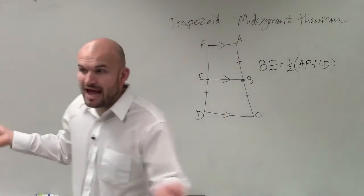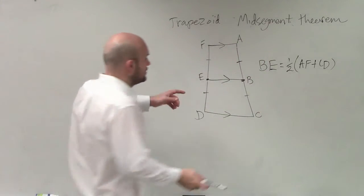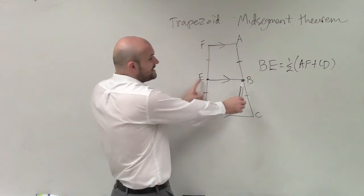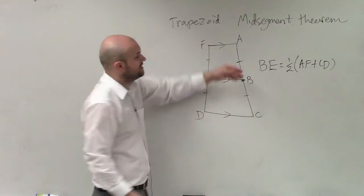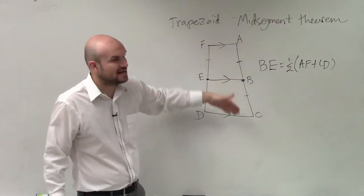So if you have a line that is parallel to your other two sides of your trapezoid and it is in the middle, then if you add the lengths of your two bases,